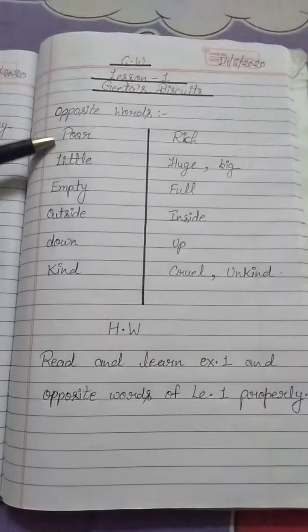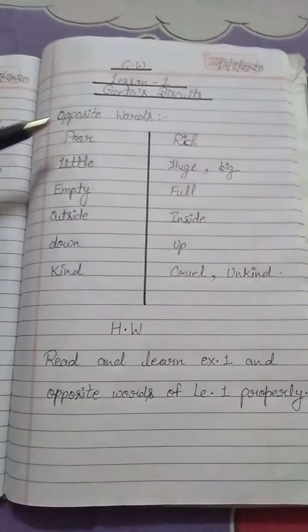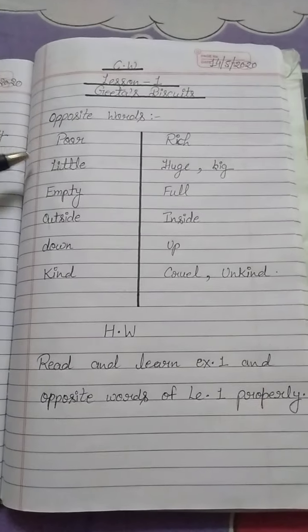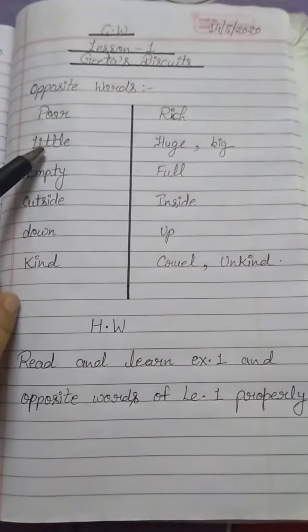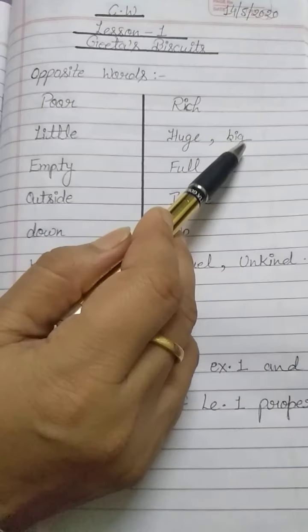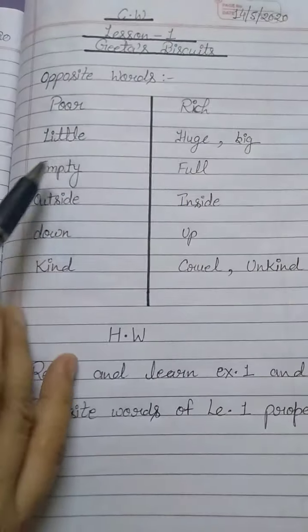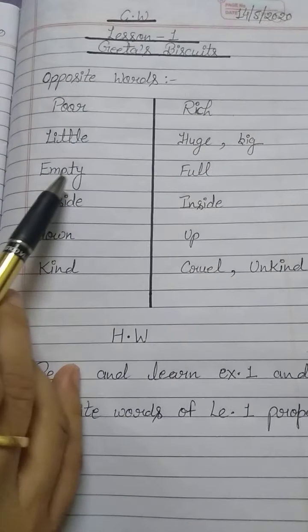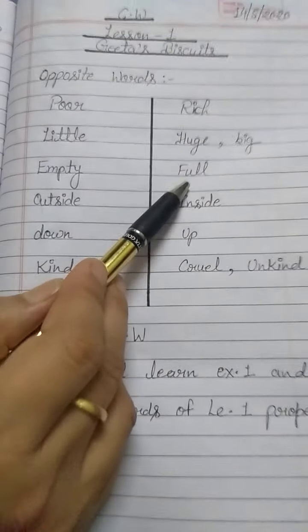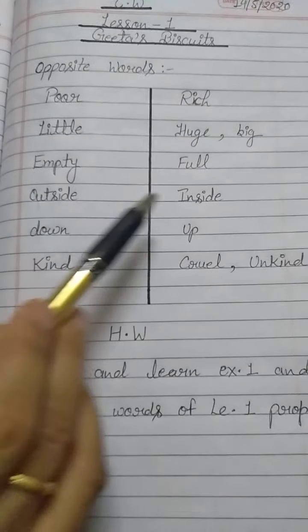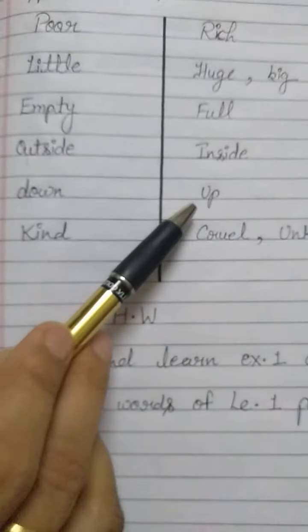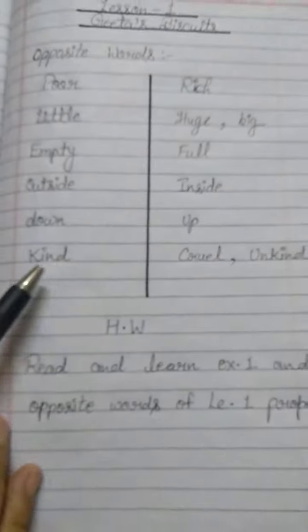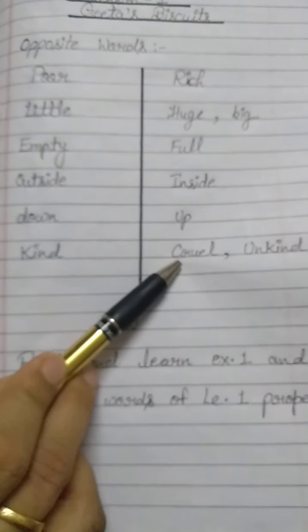Here are some opposite words for you. Number one: poor — rich. Number two: little — huge and big. Number three: empty — full. Number four: outside — inside. Number five: down — up. Number six: kind — cruel and unkind.